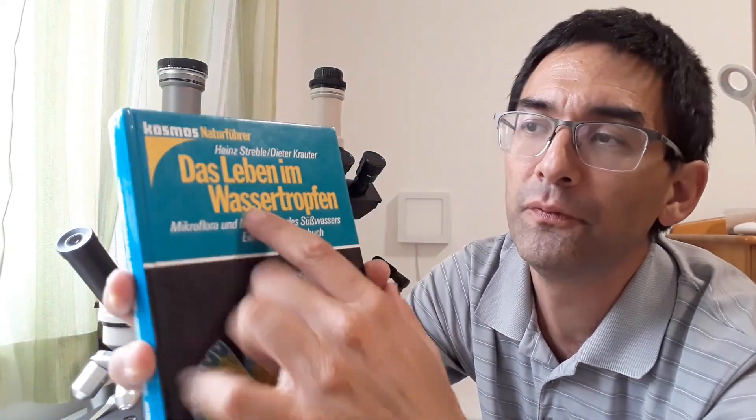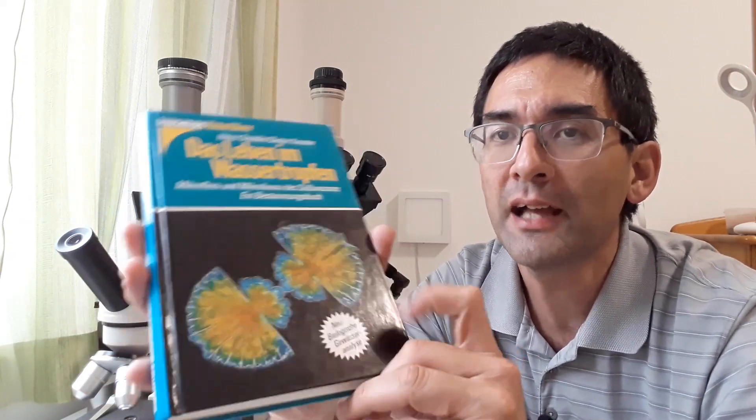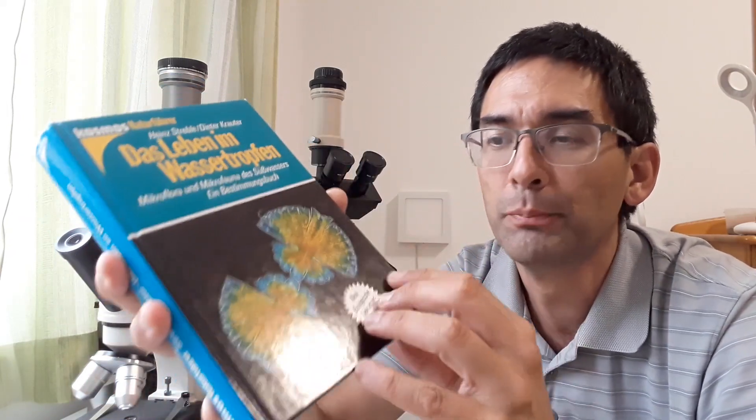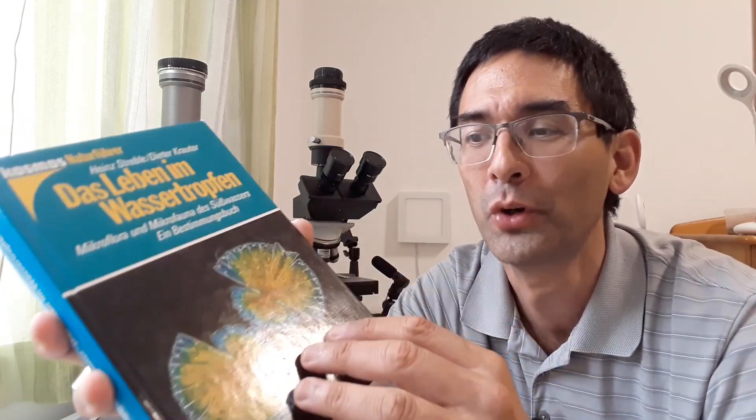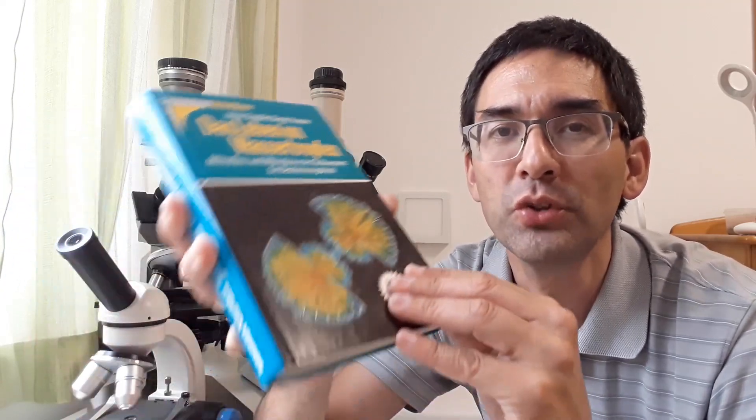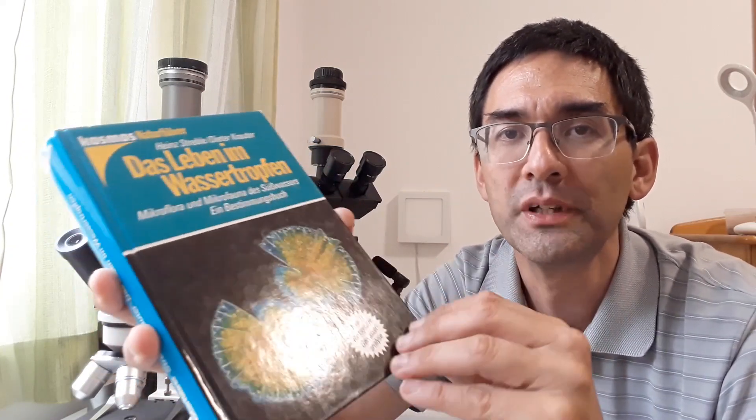It's called Life in a Droplet of Water, and it's become a standard book for anyone remotely interested in observing pond water. It's an identification book and contains hundreds of excellent drawings and descriptions of microorganisms that you find, with their binomial Latinized names.